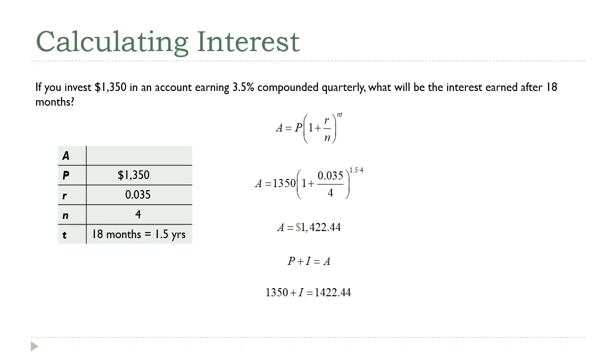I know P, that's $1,350, and I know A, we just calculated it's $1,422.44. So if I solve this formula for I, I'm going to be home free. Subtract $1,350 from both sides, and we get $72.44. That's going to be the interest earned on the investment.